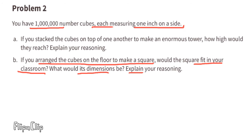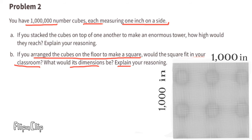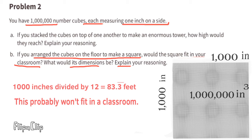Part B: If you arrange the cubes on the floor to make a square, would it fit in your classroom? The side lengths of the square would be 1,000 inches, forming a square with an area of 1 million inches squared. Since 1 foot is 12 inches, 1,000 divided by 12 equals about 83.3 feet per side.